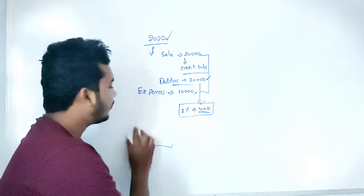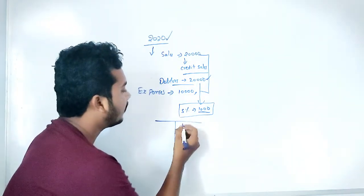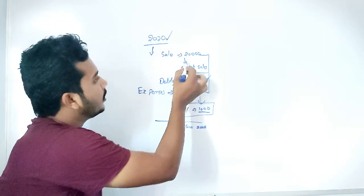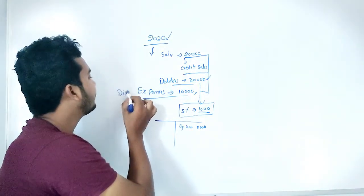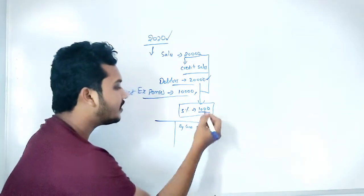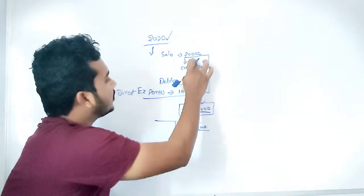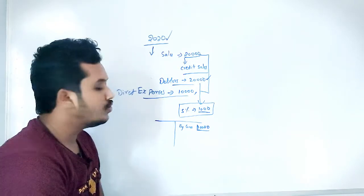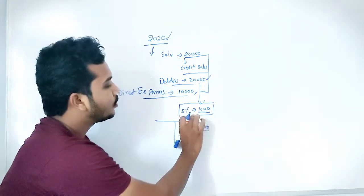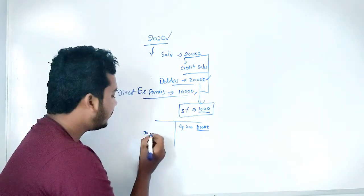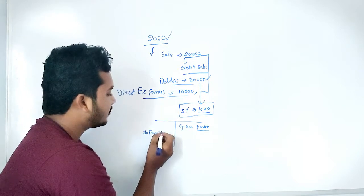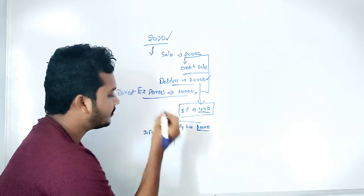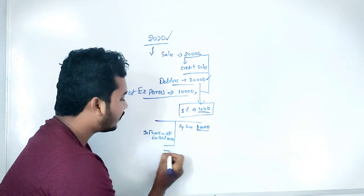When we prepare the profit and loss account, we will have income of 20,000 and direct expenses of 10,000, giving a profit of 10,000. Now we should set aside 5% of debtors as provision for bad debts — that is 1,000 rupees — which is written as 'To Provision for Bad Debts: 1,000'. The profit will now be 9,000. Problem solved.